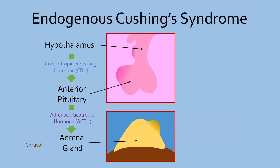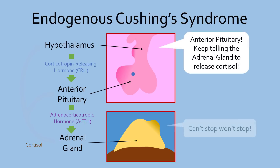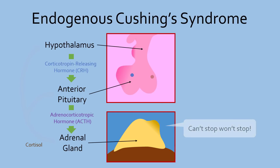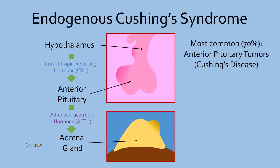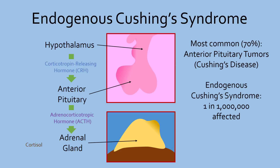Though tumors in the hypothalamus and the adrenal glands can also lead to high cortisol levels, either due to high CRH or high cortisol, Cushing's disease is the most common form of endogenous Cushing's syndrome. However, all of these tumors are rare, with around 1 in 1 million people suffering from endogenous Cushing's syndrome, with more women than men affected.